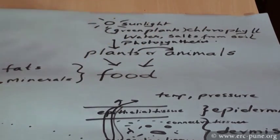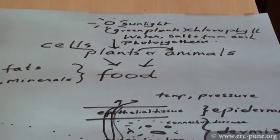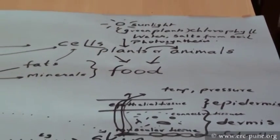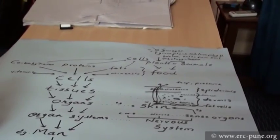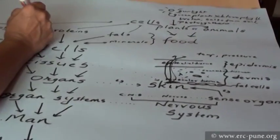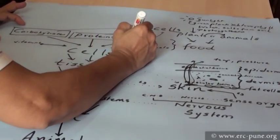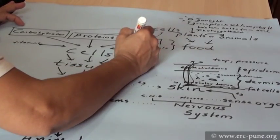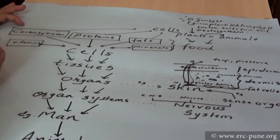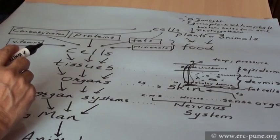All these, what are these made of? Cells. And what are these cells made of? Proteins, fats, minerals, carbohydrates, and vitamins. What is the basis of everything that is going on in nature? The entire food chain. What is the basis of all that? The whole world depends on this: carbohydrates, fats, proteins, vitamins, and minerals.